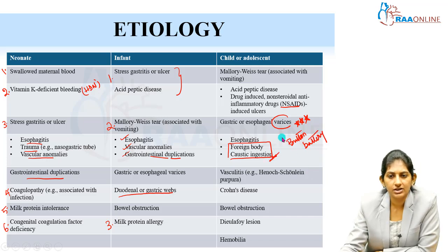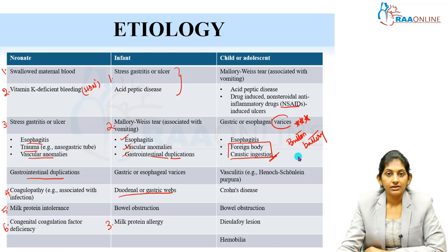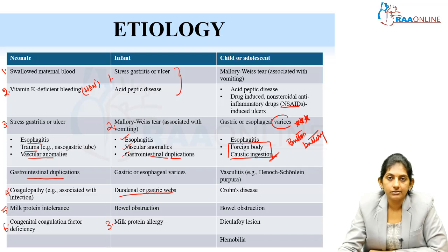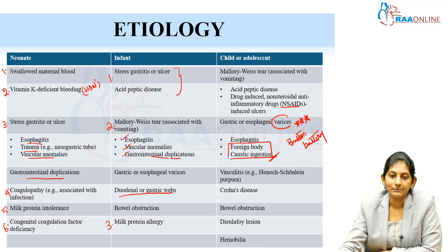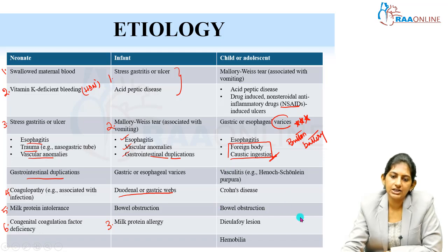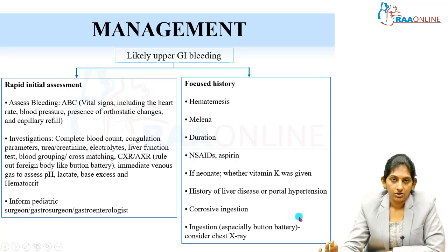Ask about alkali ingestion or corrosive poisoning as an attempt at suicide. Many times we do not ask, and suddenly the child presents with hematemesis — only on probing do they reveal they drank something. This is very shocking nowadays, even 8- or 9-year-old children. Further etiologies include Crohn's disease, vasculitis, bowel obstruction, and Dieulafoy lesions. Remember the common etiologies — that is enough.